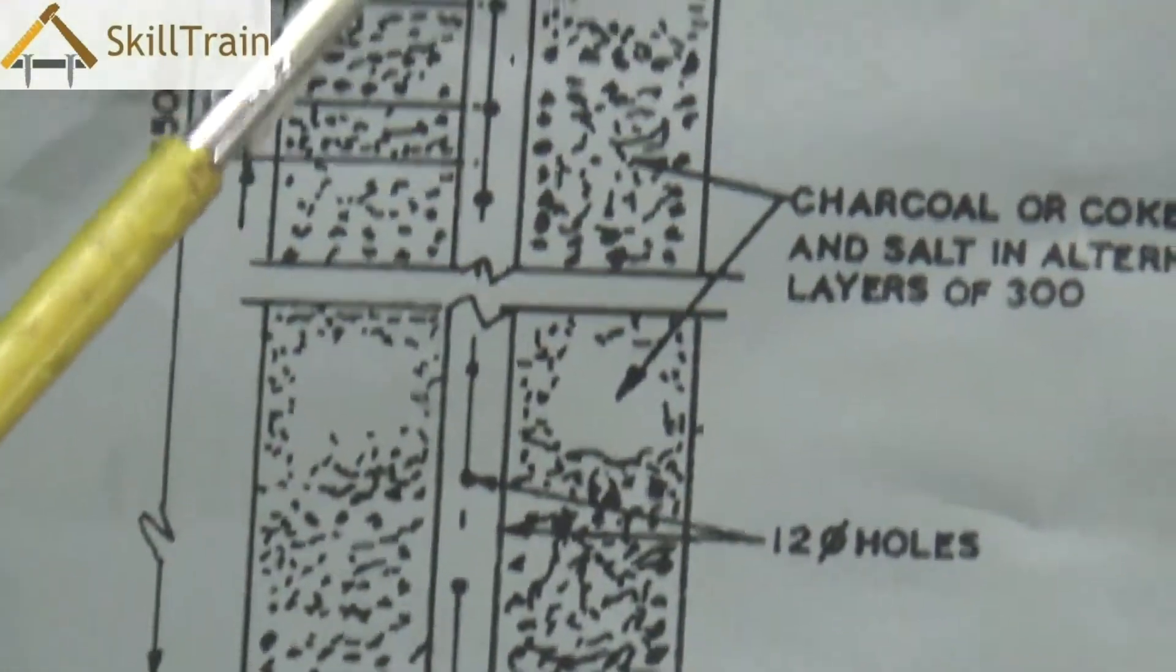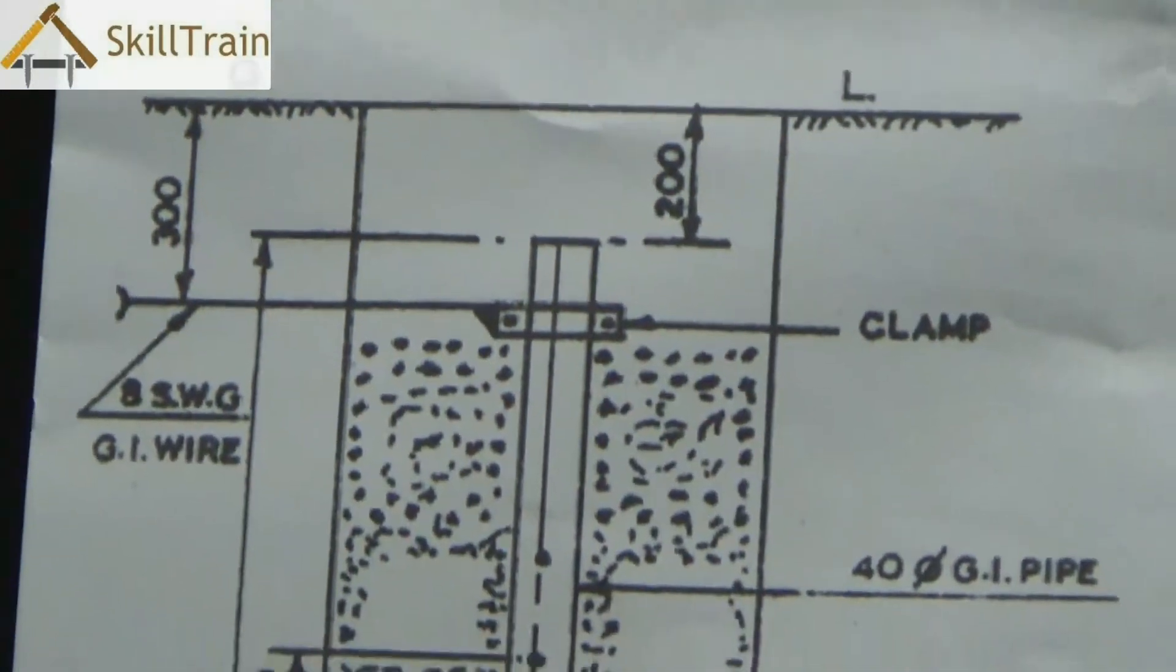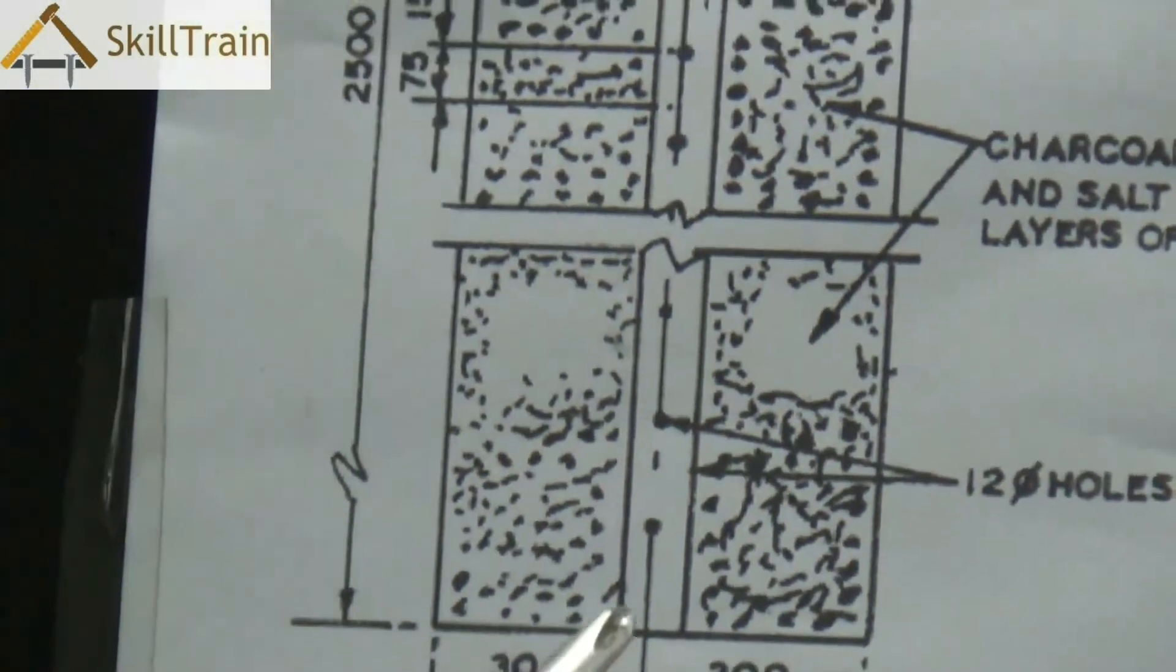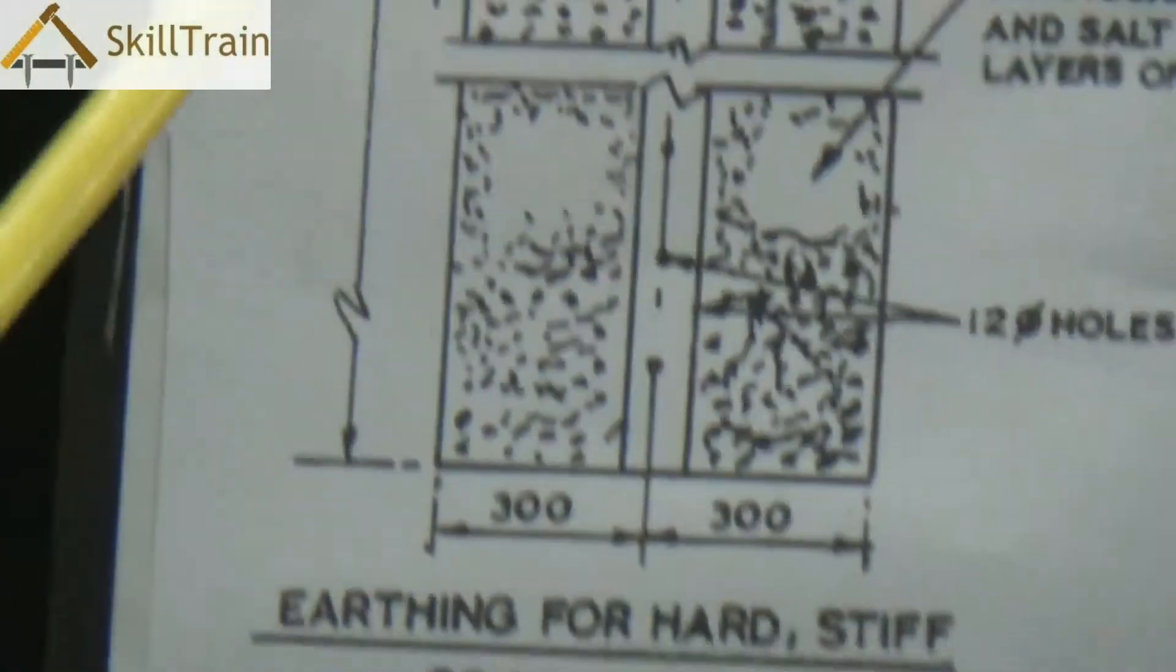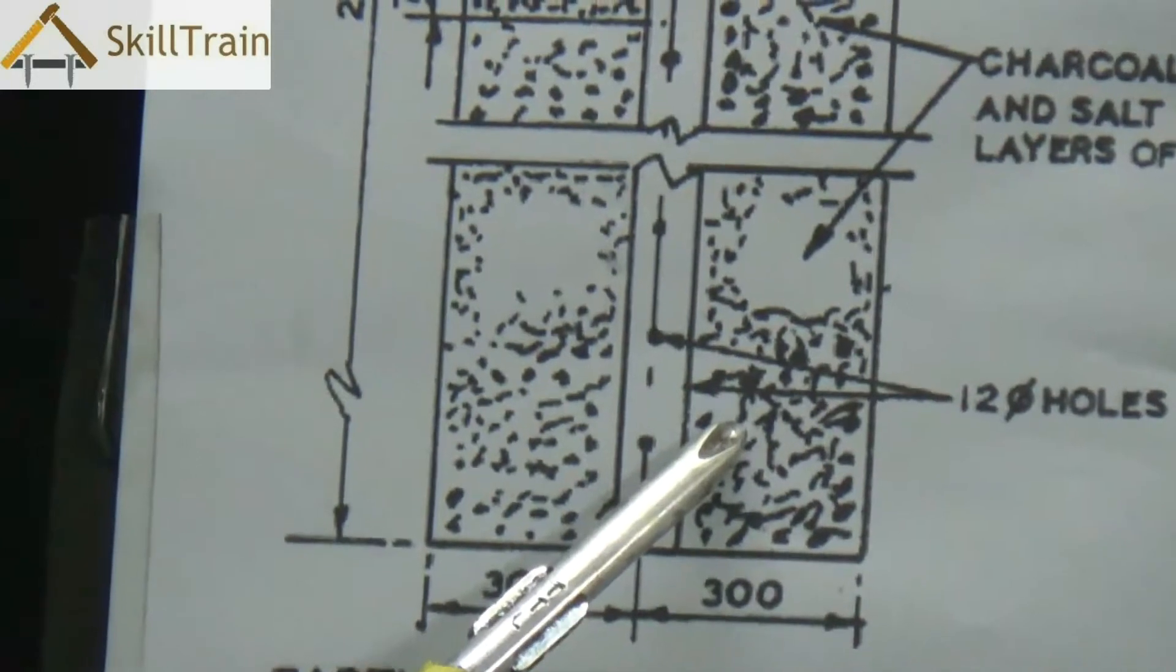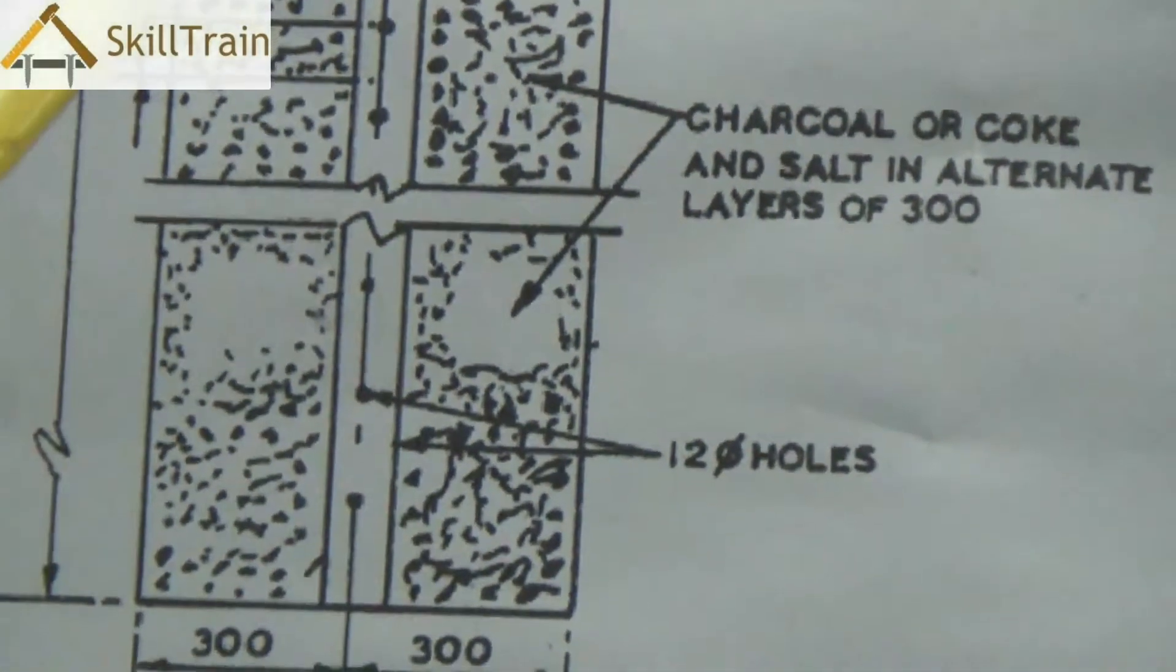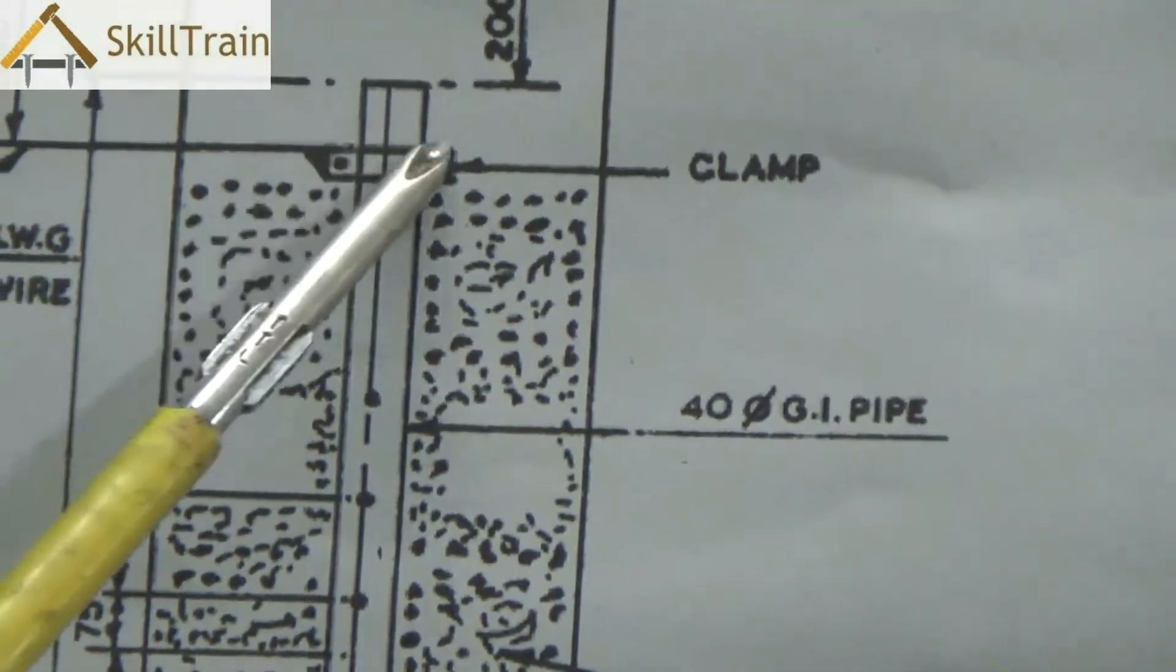The other type of soil is hard soil, and in hard soil you will need to place salt and charcoal mixture because there is no moisture. The charcoal essentially maintains the humidity or increases the conductivity, and salt as an ionic solution reduces the resistance to the dissipation of electricity.